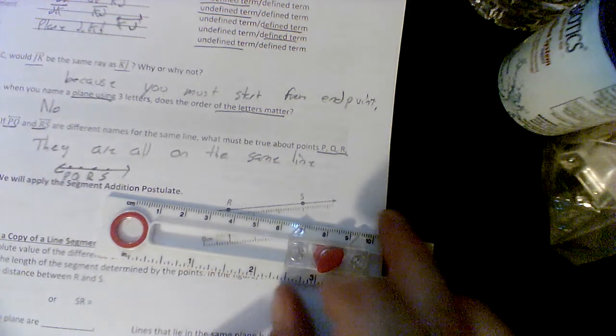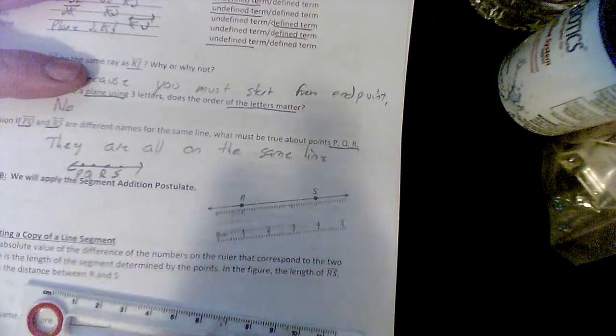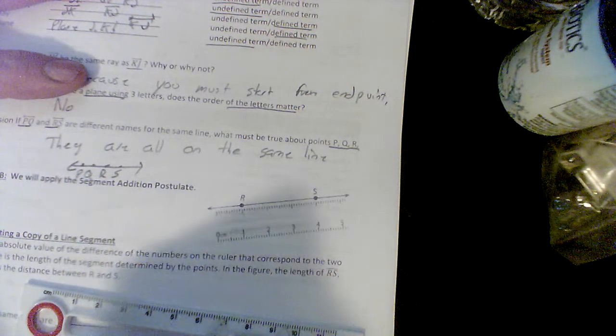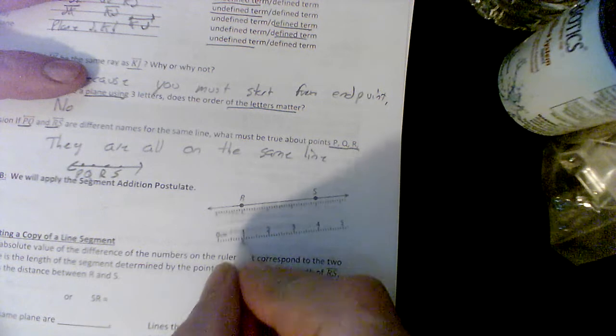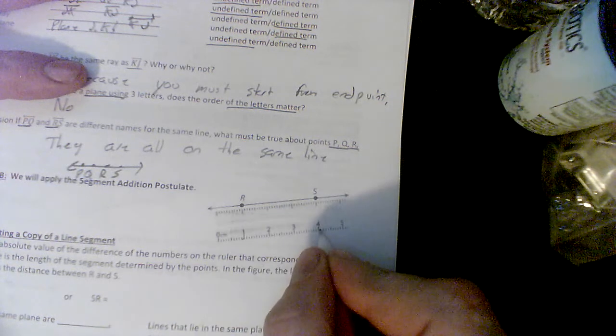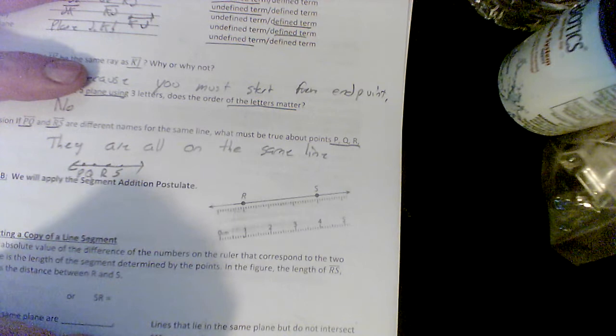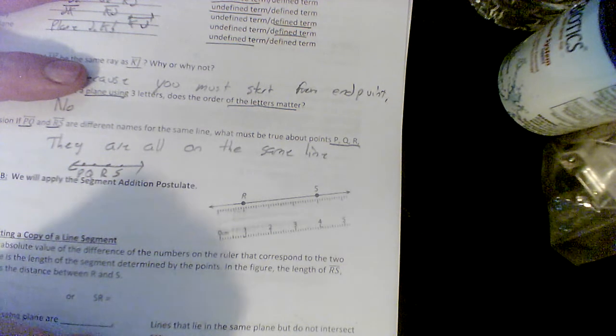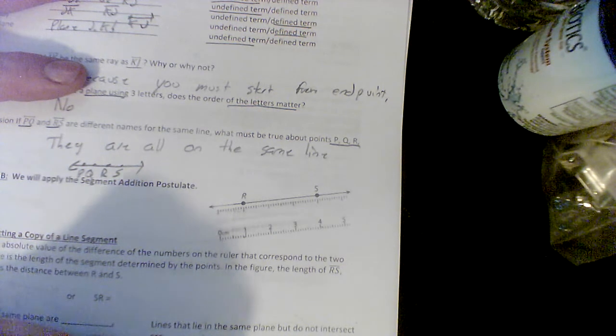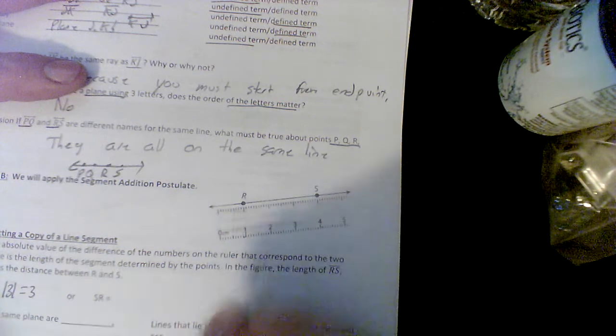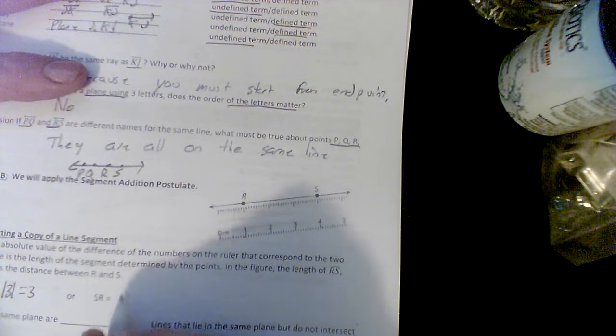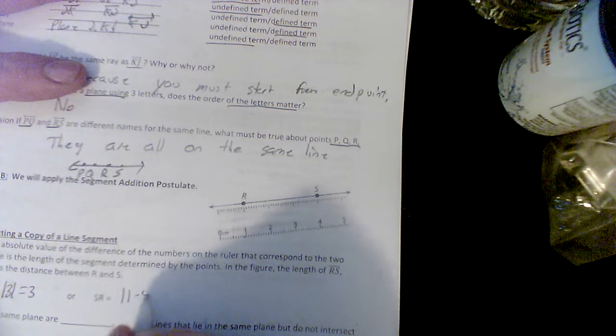It says the distance is the absolute value of the difference of the numbers. So if R is one and S is at four, the distance of RS is four minus one, which is the absolute value of three, which is just three. From one to four is three. Or I could say the absolute value of one minus four, which would give you the absolute value of negative three, which is also just three.